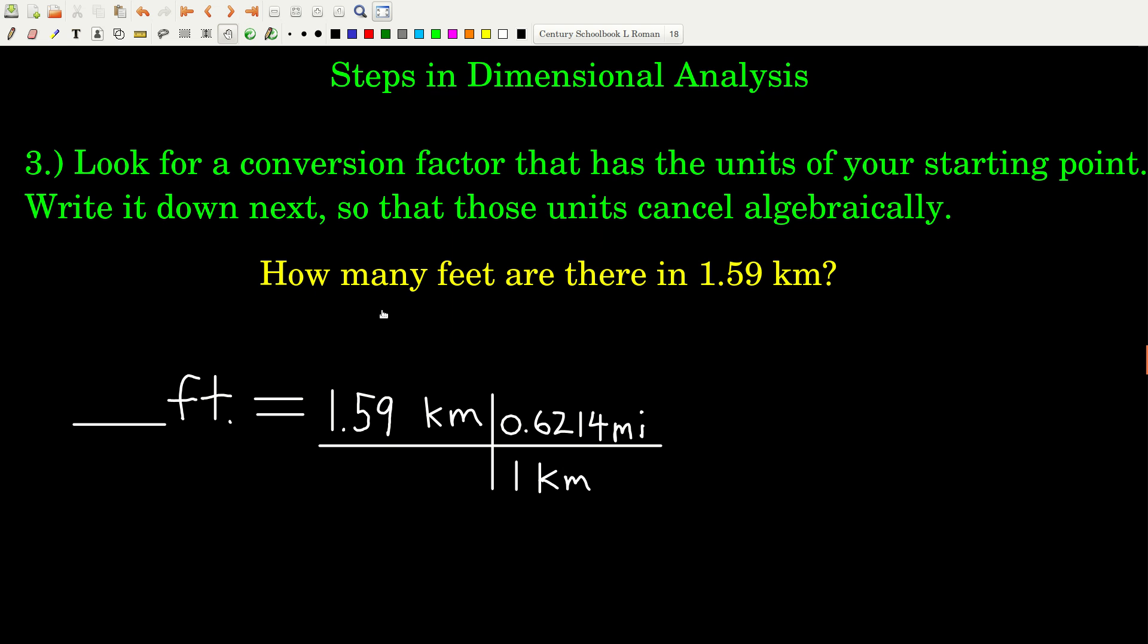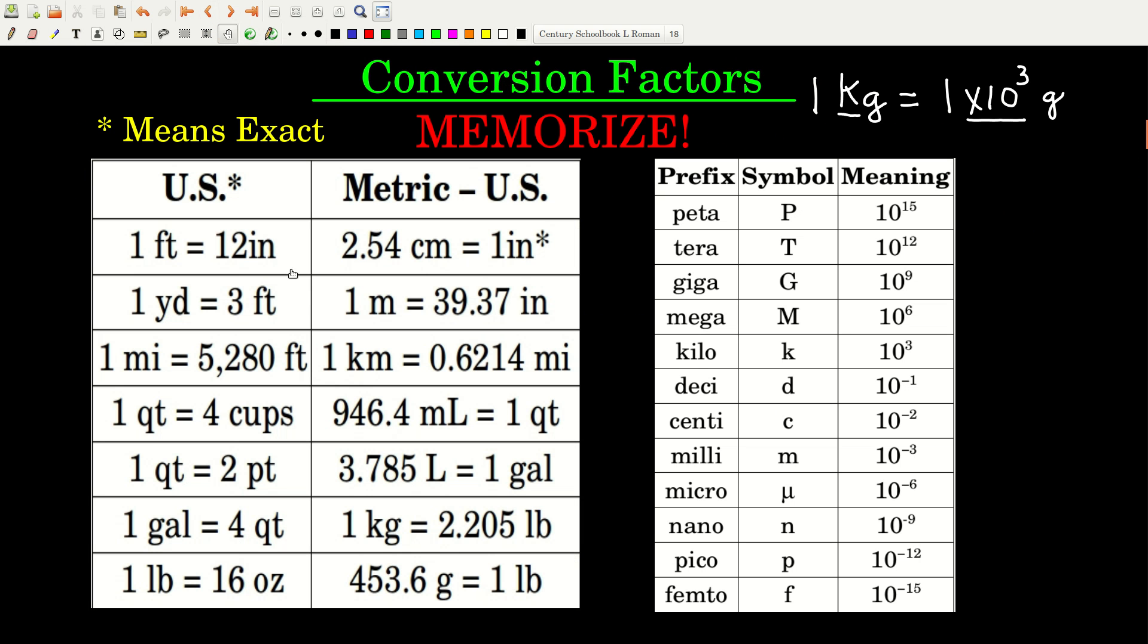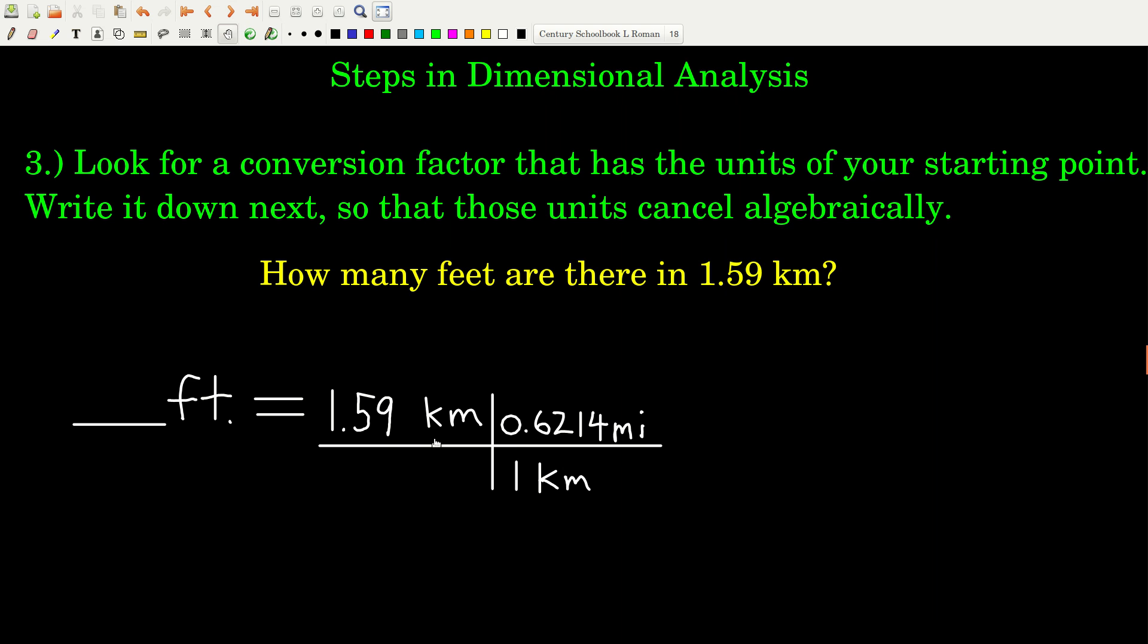Once you get that far, the next step is to look for conversion factors. Where do you look for conversion factors? One big place is that table that I just showed you guys. So that's why you need to memorize it. Also, you will get different conversion factors as we go through the course. Another place where you will find conversion factors is in the problem itself. Sometimes, when you read a problem, they give you conversion factors in the problem statement itself. But here, we're going to get all of our conversion factors from our table. So what you do is you just look at the units of your starting point and you find any conversion factor that has those units in it. If I go back and look at that table, our starting point has units of kilometers, so we go over here and we find kilometers right there. And we write it down. And when you write it down, you write it down so that the units of your starting point cancel out algebraically.